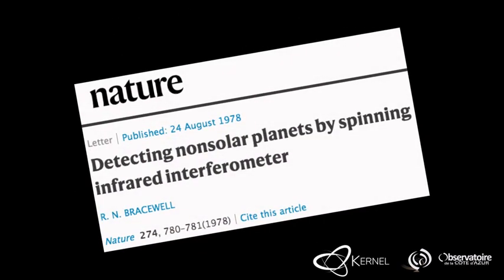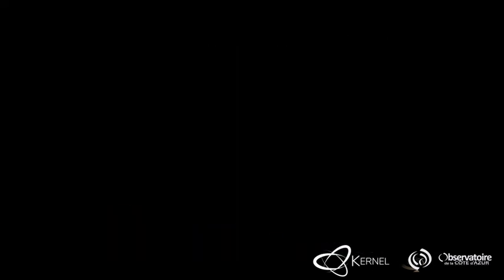In 1978, Ronald Bracewell, an Australian-born physicist, publishes a letter in the scientific journal Nature that introduces an intriguing idea. It seems possible to directly detect the light from an extrasolar planet by using a spinning infrared interferometer in space.